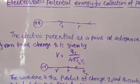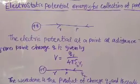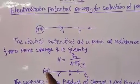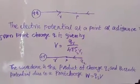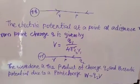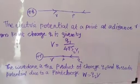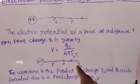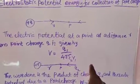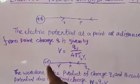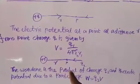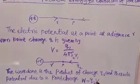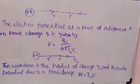Now consider another charge Q2 is being brought or moved from infinity to point P, at distance R from plus Q. Work is done. This work done is the product of charge Q2 and the electric potential due to the point charge: W equal to Q2 into V. This work is done when charge Q2 moves from infinity to point P, at distance R from the positive charge Q1.